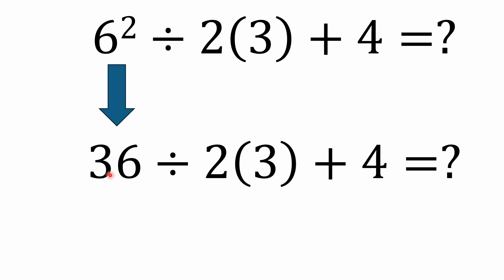So 6 squared is equal to 36. 6 squared is the same thing as 6 times 6. So we bring 36 down here. We have 36 divided by 2 times 3 plus 4.